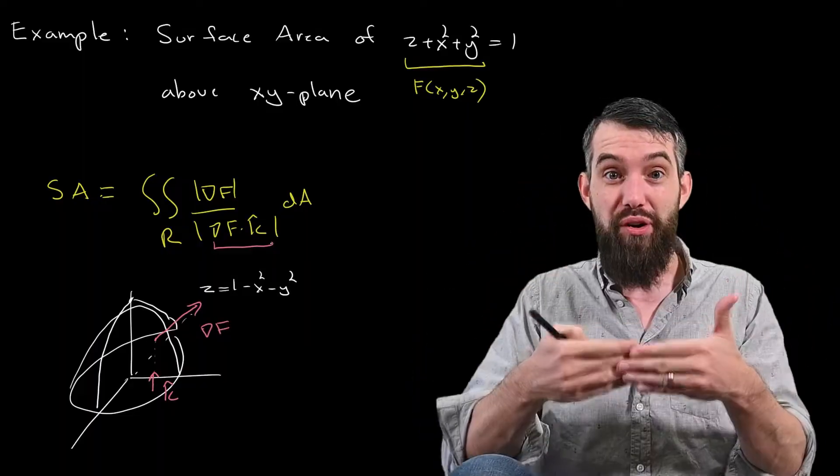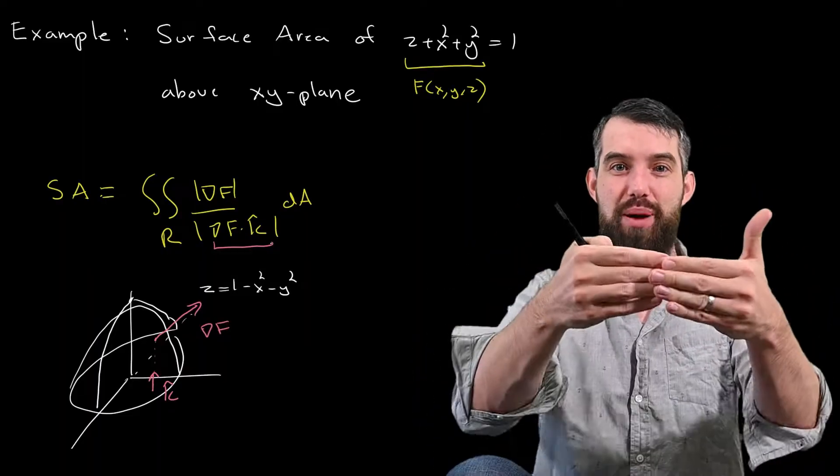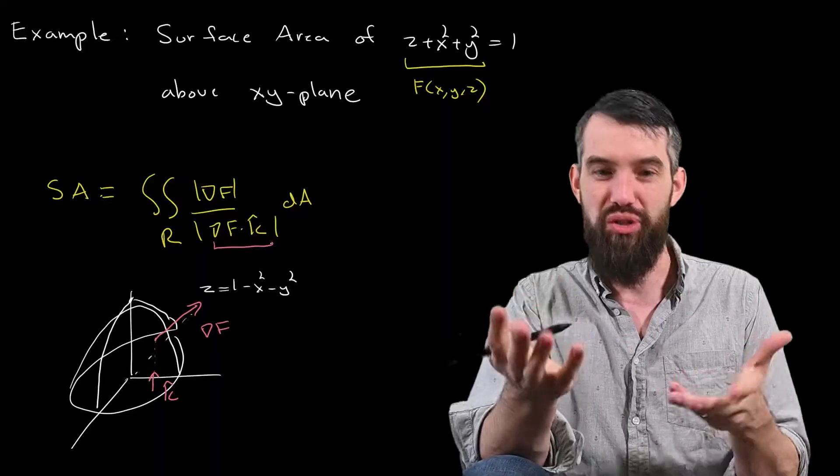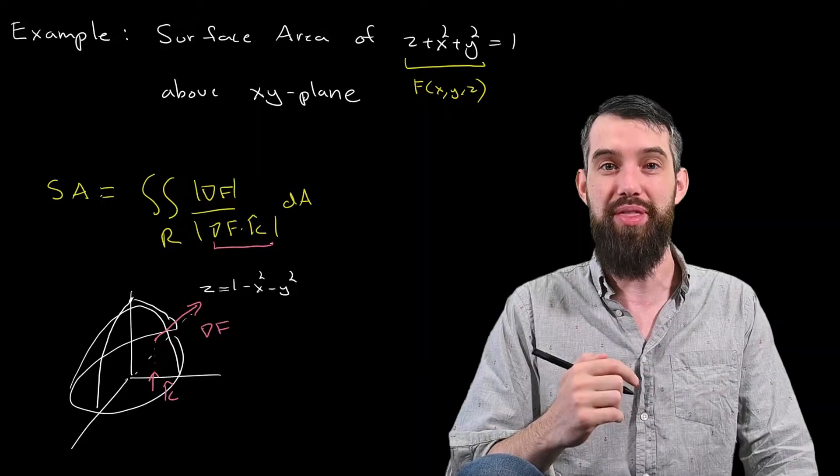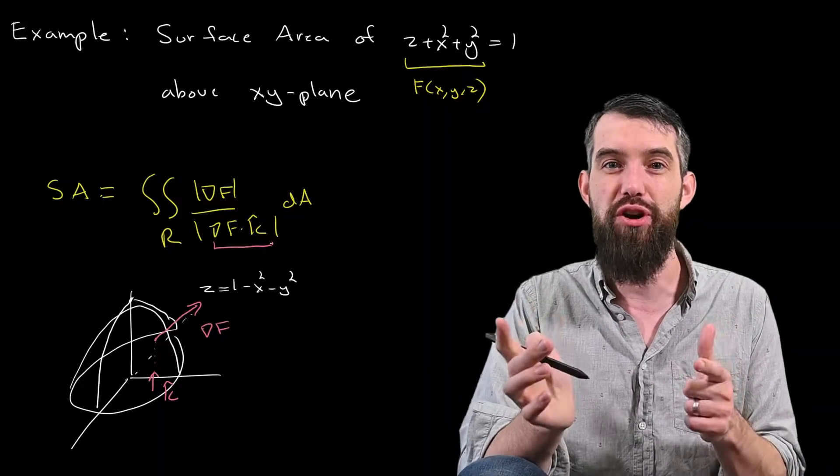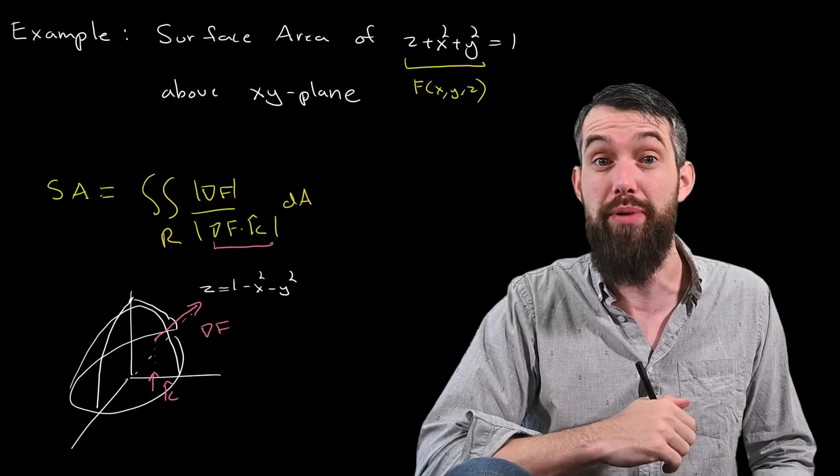And has the property that the gradient of f dotted with the k hat is actually never zero. For example, if your surface was straight vertical, then the gradient of f, which would come directly out, it would have a zero dot product with k hat. But in this case, that's not what's happening. So we can use gradient of f dotted with k hat, and the fact that this is never zero is going to mean that we've got a proper integrand that we can work with.